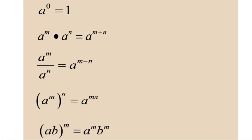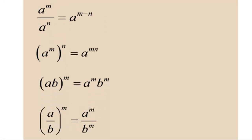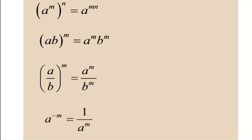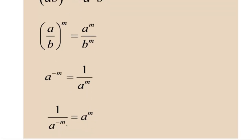So (ab) to the m is the same as a to the m times b to the m, when a and b are in parentheses. Same thing with division — if you have bases that are being divided and those are raised to an exponent, then you raise both bases to that exponent. Anything to a negative exponent is the reciprocal of that base to that positive exponent. One over anything to a negative exponent is the reciprocal with the base in the numerator to a positive exponent, so negative exponents mean reciprocal.